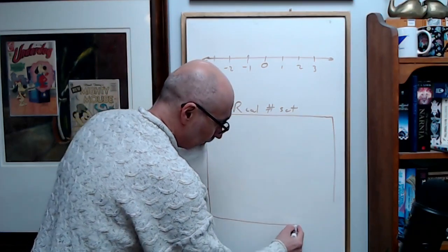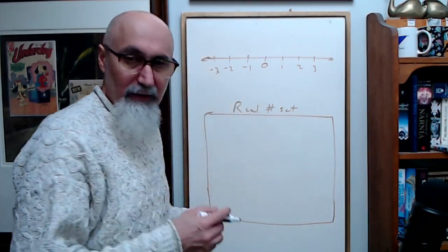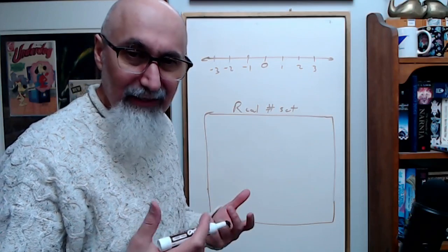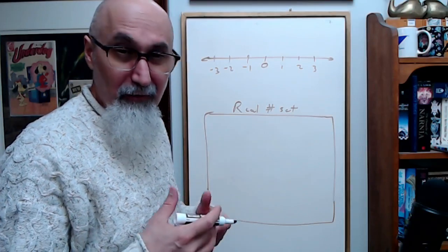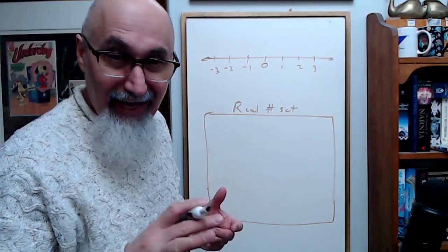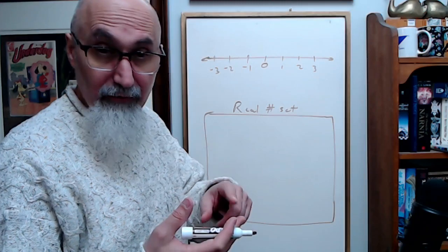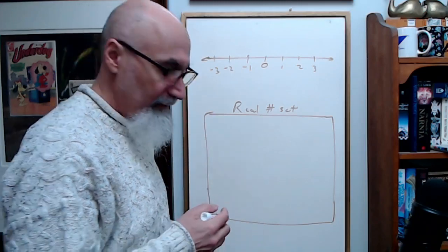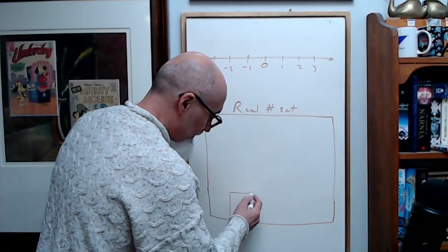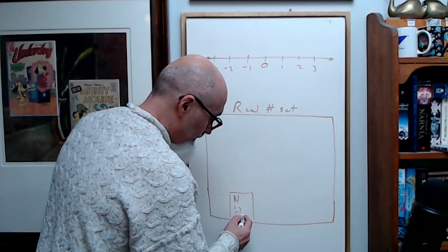The first type of numbers that human beings really began to grasp were natural numbers — counting numbers: one, two, three, four, five. We call these natural numbers.